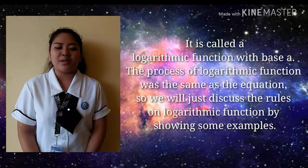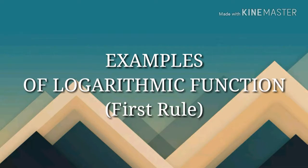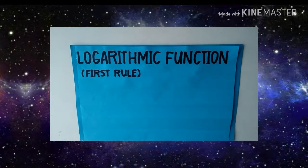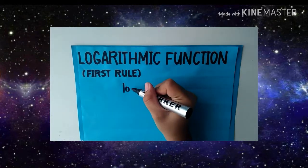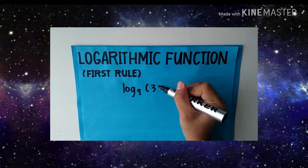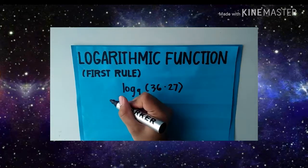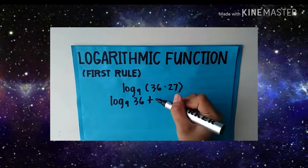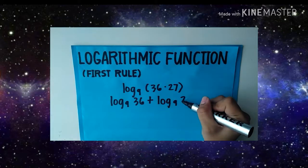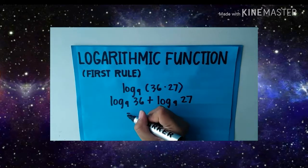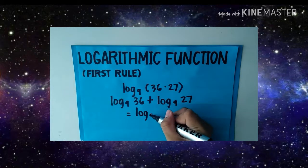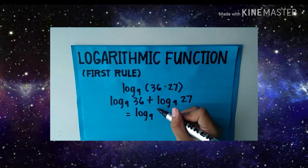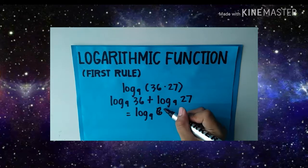The process of logarithmic functions is the same as the equation, so we will discuss the rules by showing examples. The first example is the first rule: logarithm of 36 times 27 with base 9. Copy log base 9 of 36, change multiplication to addition, and copy log base 9 of 27. Simplify: since they have the same base, add 36 and 27, giving log base 9 of 63.